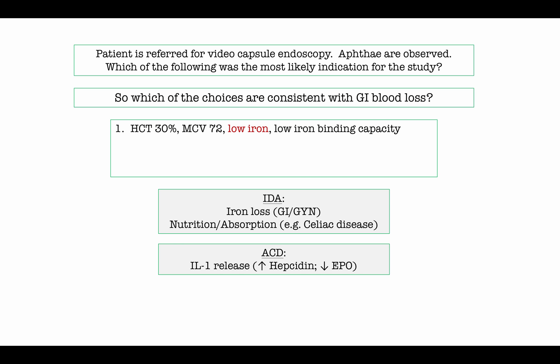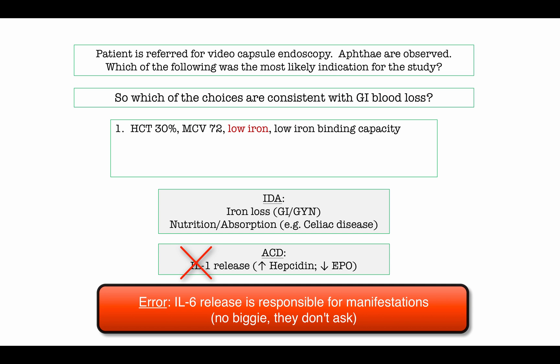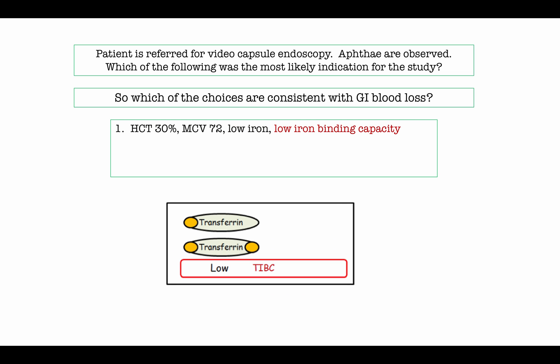In anemia of chronic disease, I've simplified a complex multifactorial etiology into a single mechanism: IL-1 release. IL-1 leads to increased hepcidin levels, causing iron to become trapped inside cells — iron is not available in the general circulation. IL-1 concurrently suppresses release of erythropoietin. Anemia of chronic disease is also associated with a decrease in iron binding capacity. The body synthesizes less transferrin, meaning fewer binding sites for iron, expressed as a low iron binding capacity.